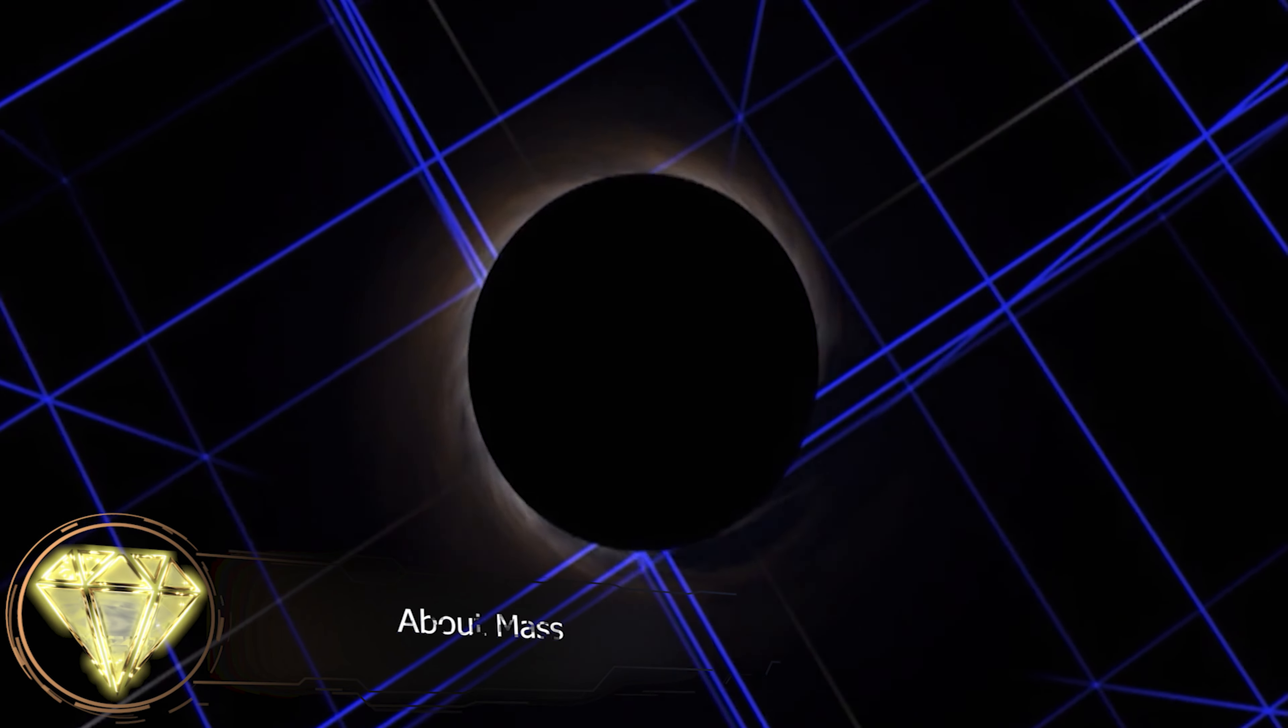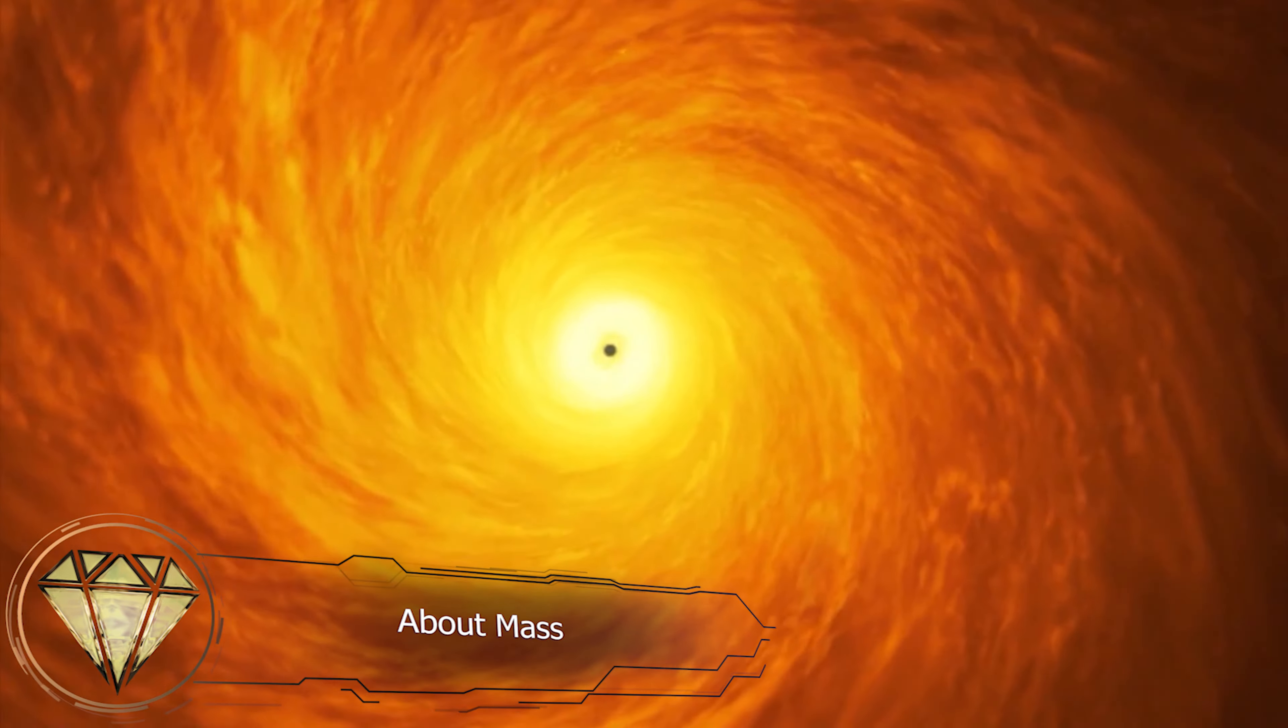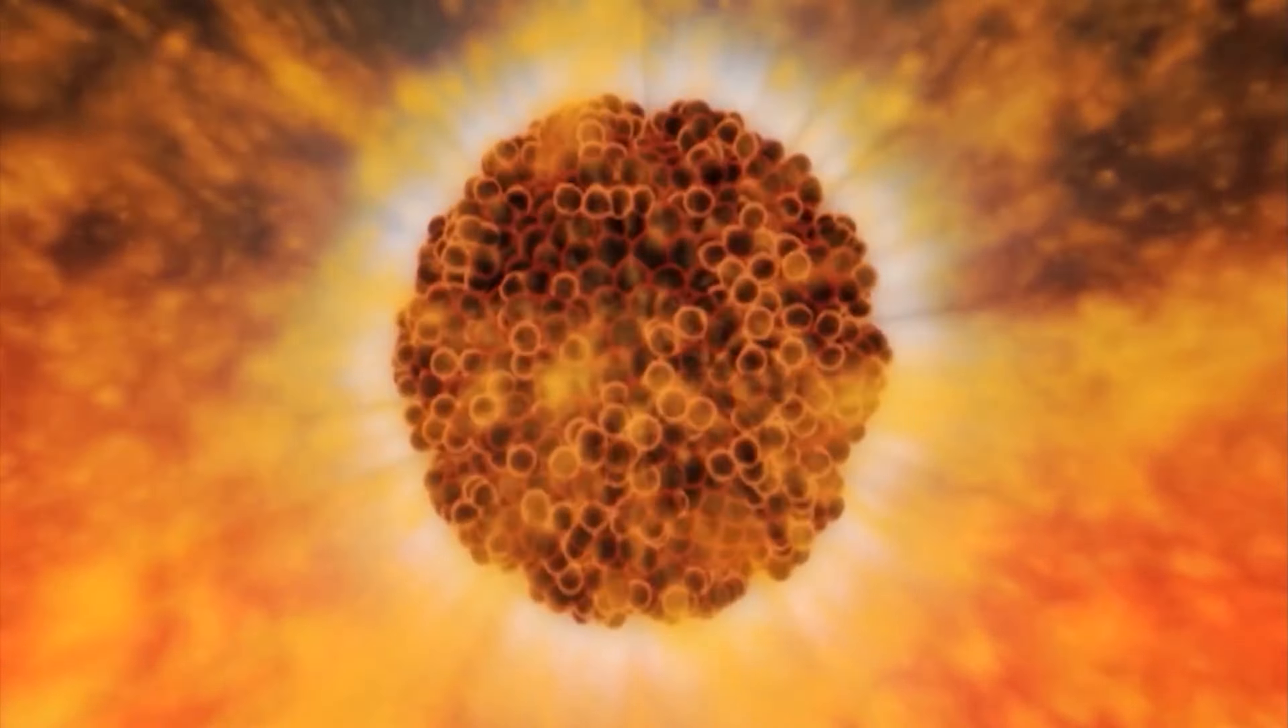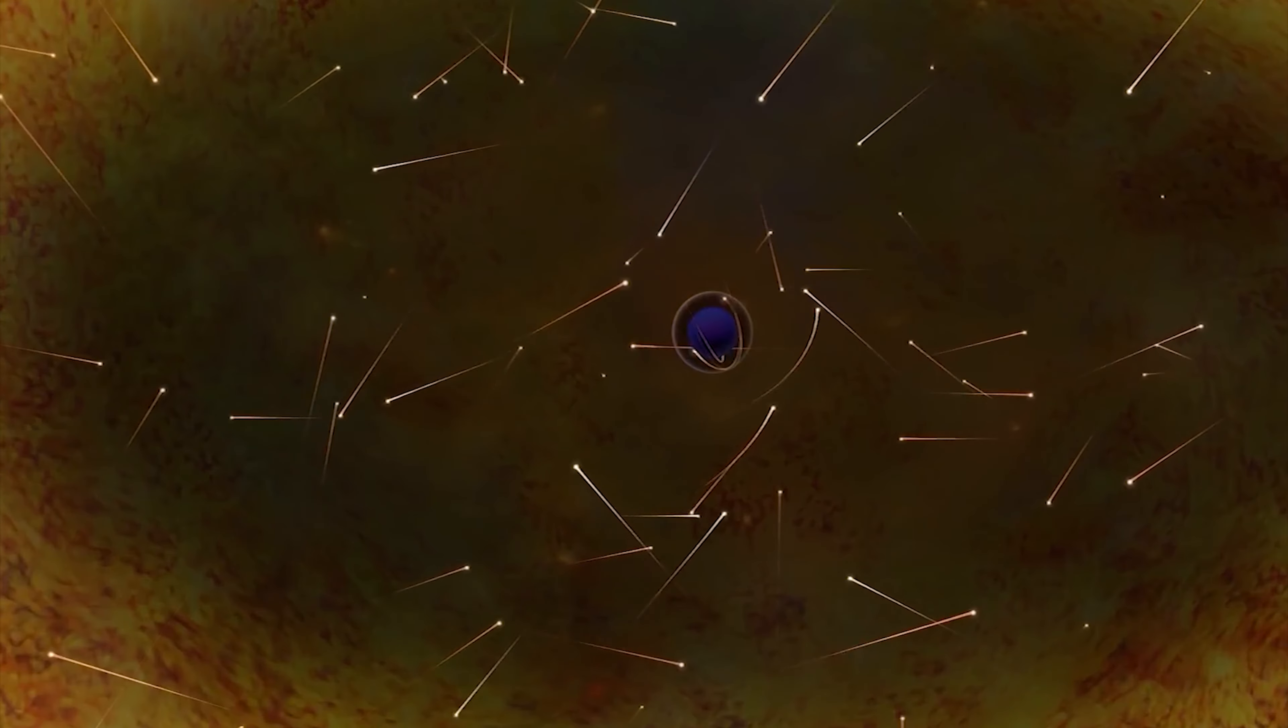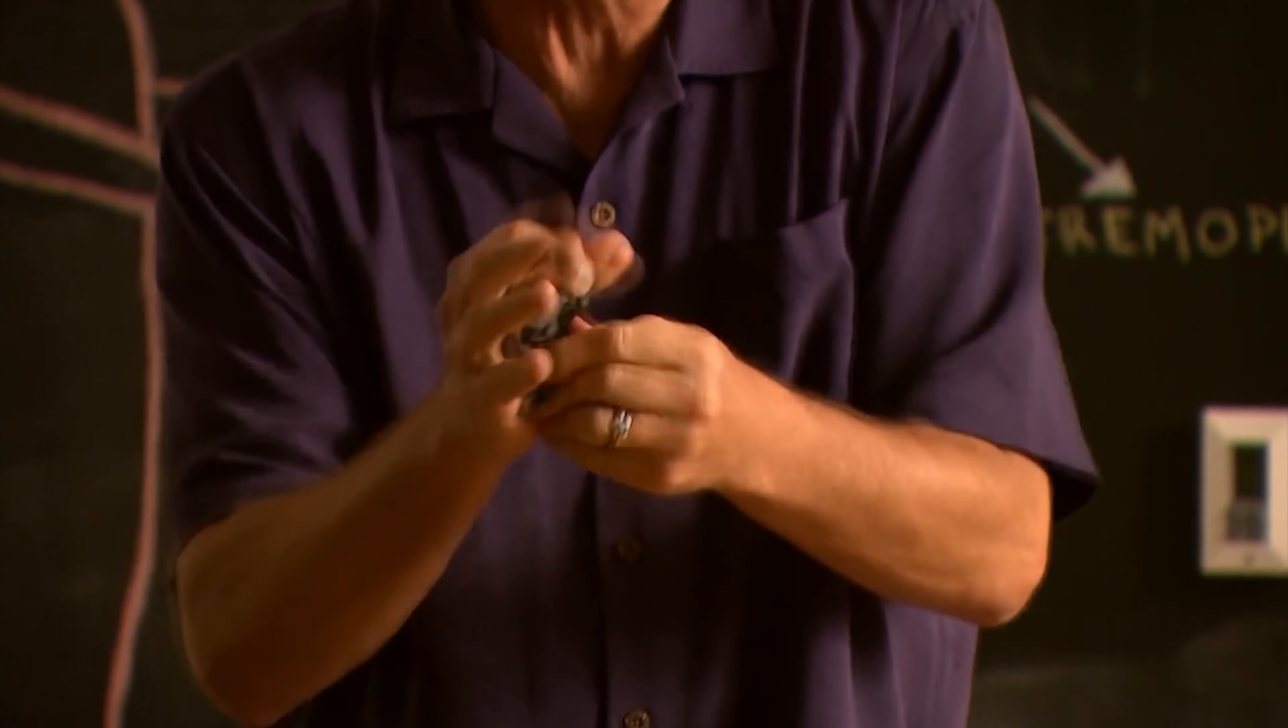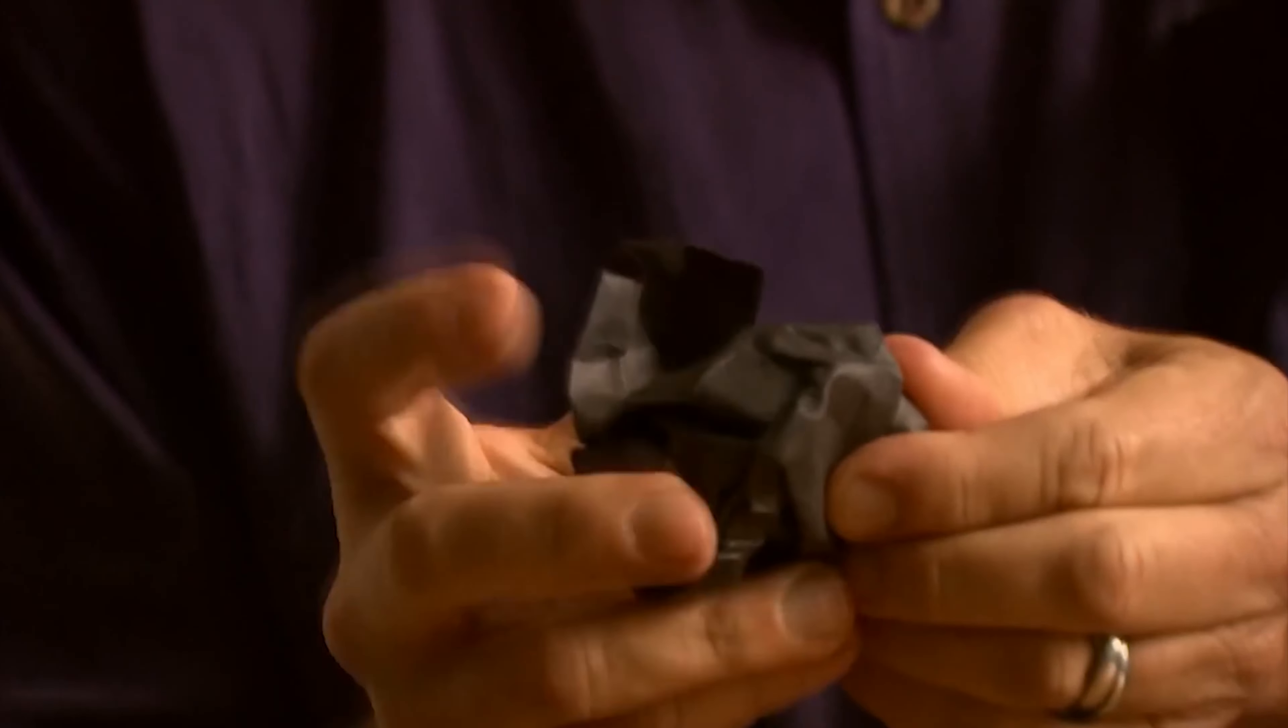About Mass. First, let us calculate the mass of a black hole with a rather small diameter, say, 1 mm in diameter. Before we do that, let me explain one academic term to you all. It is the term of gravitational radius, or Schwarzschild radius.